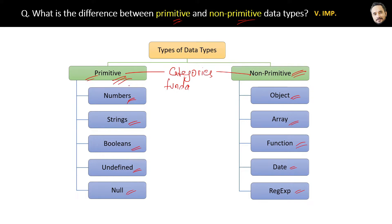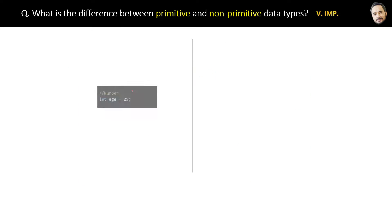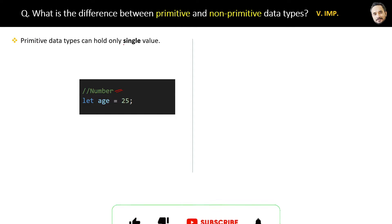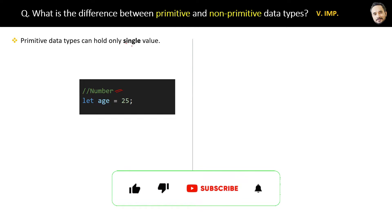Let's talk about primitive data types first. Here is one primitive data type: number. The first point about primitive data types is that they can hold only a single value, which is why we also call them simple data types.